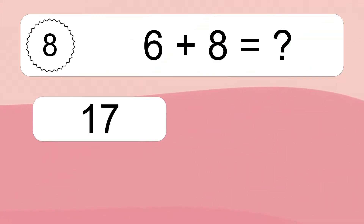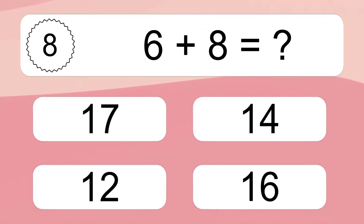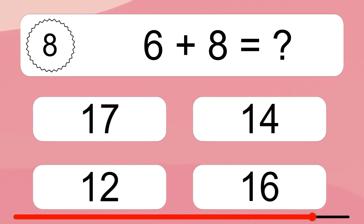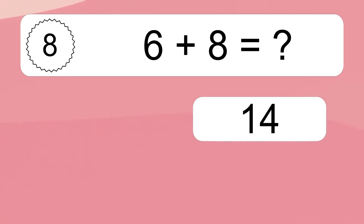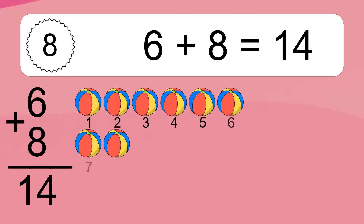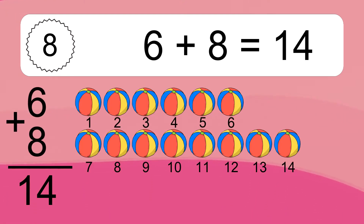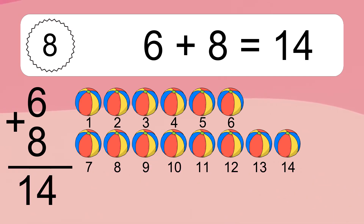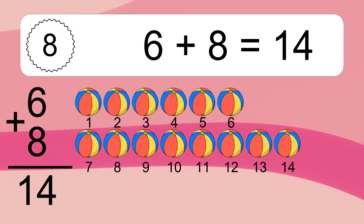6 plus 8 equals what? 6 plus 8 equals 14. Let's count it. 1, 2, 3, 4, 5, 6, 7, 8, 9, 10, 11, 12, 13, 14.